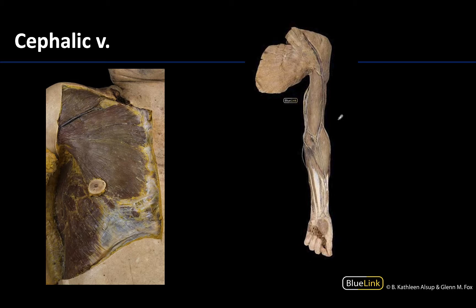The cephalic vein is going to drain lateral components of the superficial upper limb. We're more going to see it associated with the region we refer to as the deltopectoral triangle, which has boundaries of the deltoid, the pectoralis major, and the clavicle. You can see that fairly large, significant vein running right through that deltopectoral triangle. It will eventually drain into the deeper axillary vein, very close to the pectoralis major.